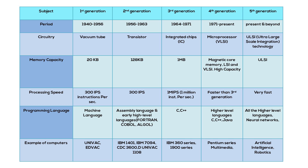The fifth generation of computers is still in development. It uses Ultra Large Scale Integrated chips — ULSI — that contain millions of components on a single chip. These computing devices are based on artificial intelligence. Voice recognition is also part of the fifth generation and is already in use today. The aim of the fifth generation is to create machines that can process and respond to natural language, with the capability to learn and organize themselves.